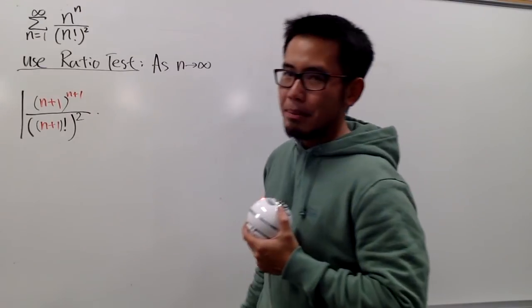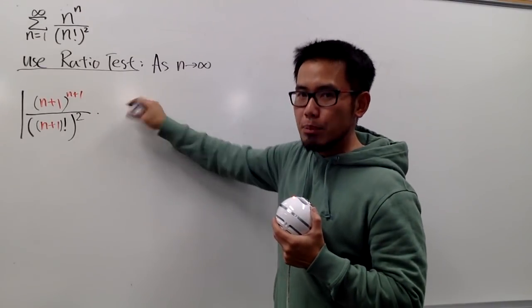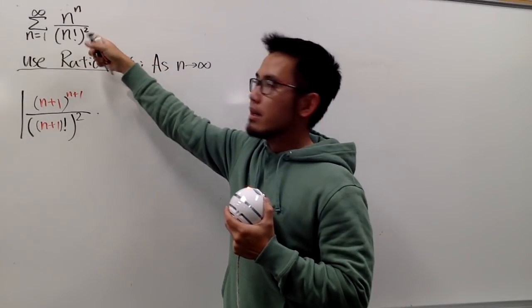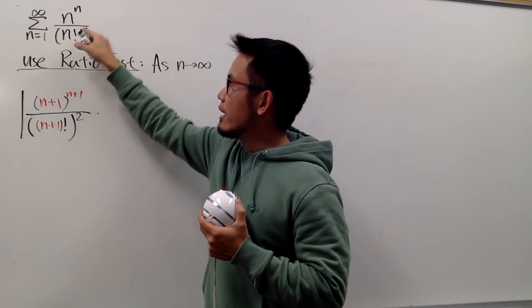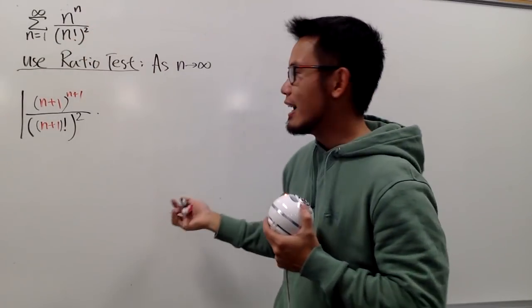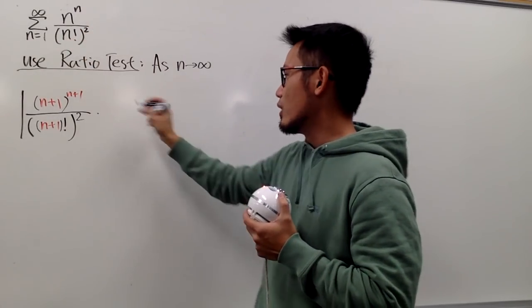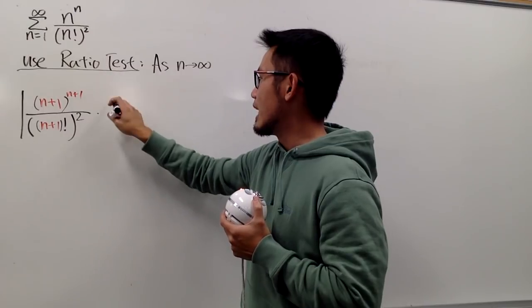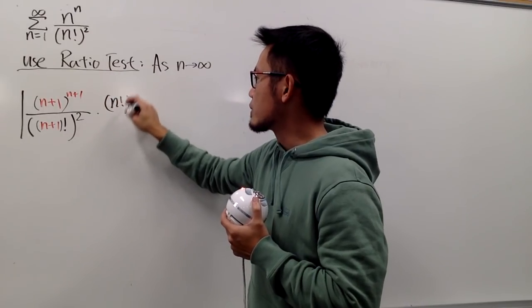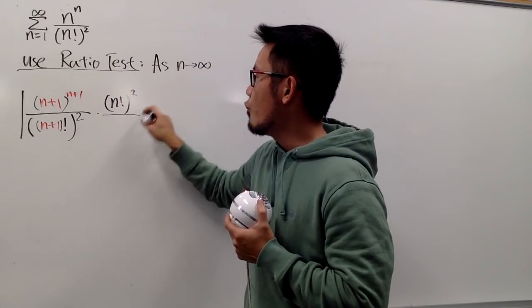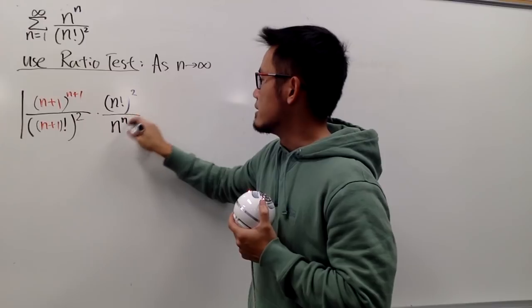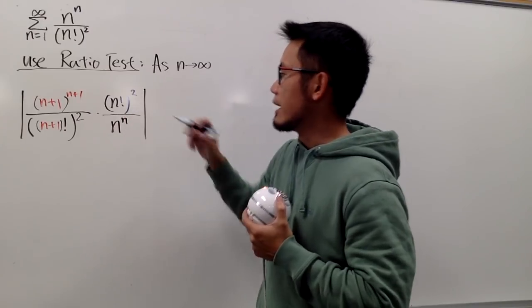And we multiply by the reciprocal of a_n. This is your a_n, so just take this, flip that. So of course we will just have n factorial squared over n to the nth power, like that.